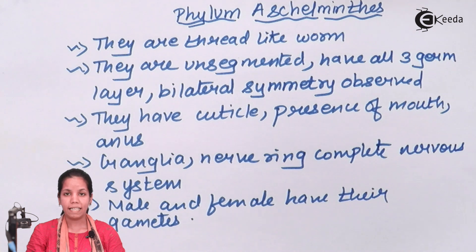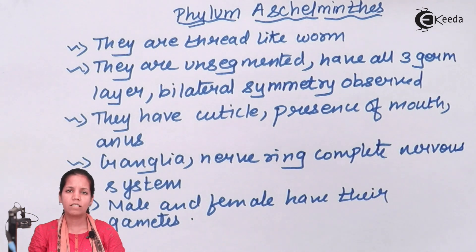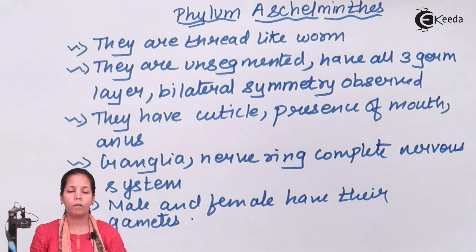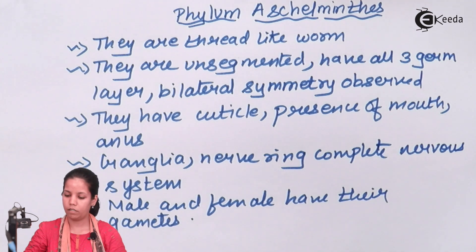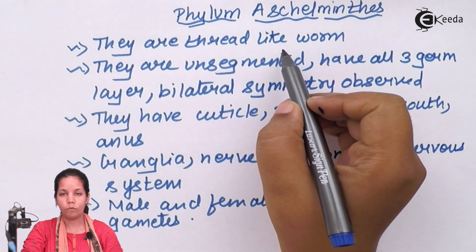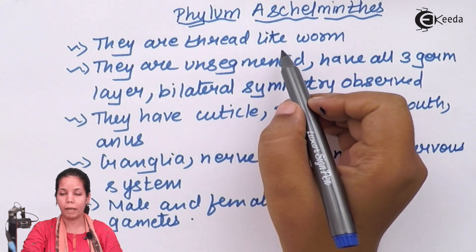Aschelminthes have bilateral symmetry. They also have pointed ends to their structure and the size can vary depending upon the region they are present in. There are small thorn-like structures present on their body which are termed as rough cuticles. Aschelminthes are basically called thread-like worms because they look like threads under an electron microscope.